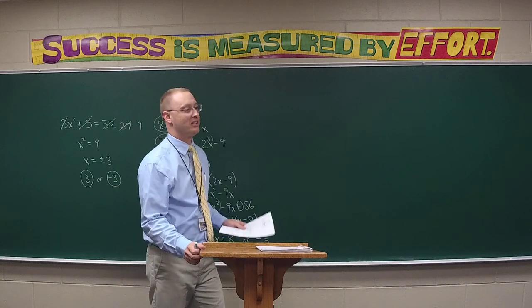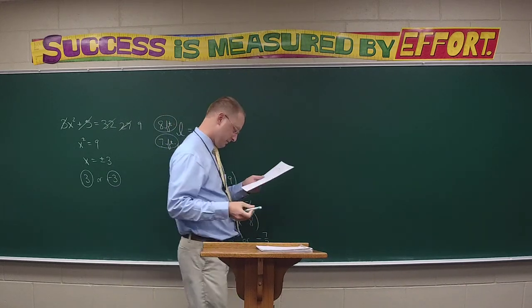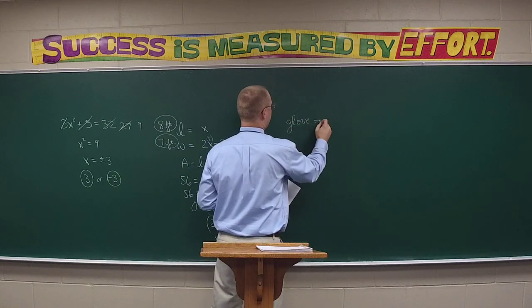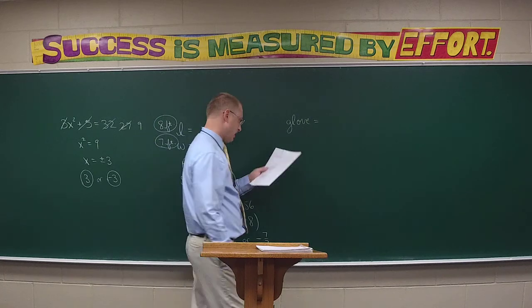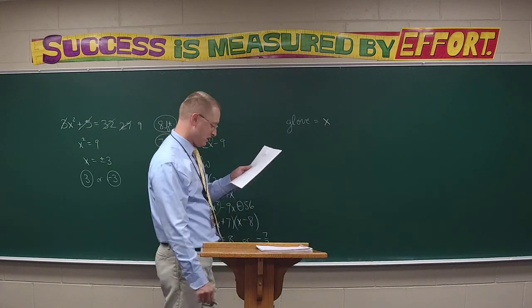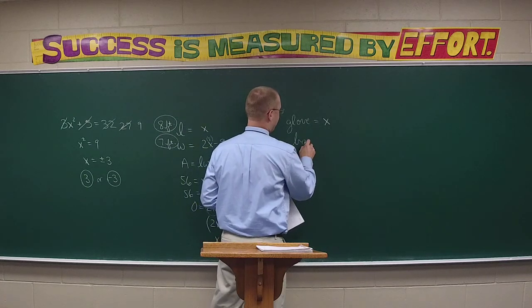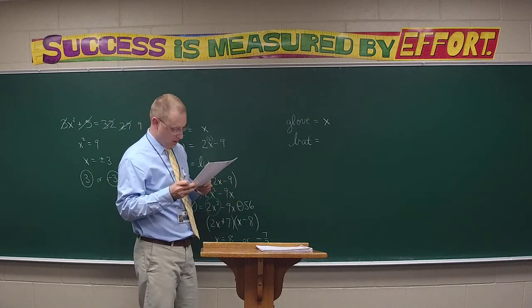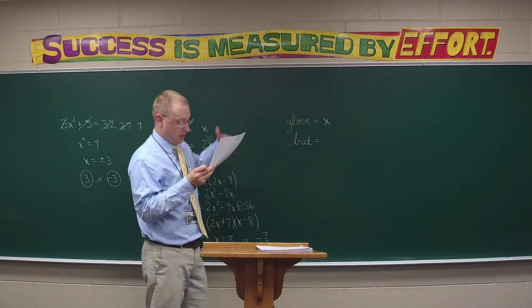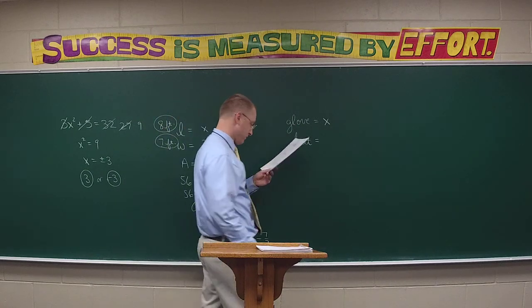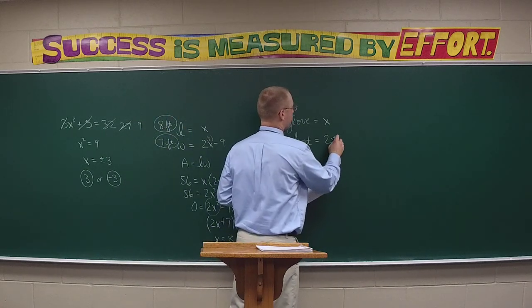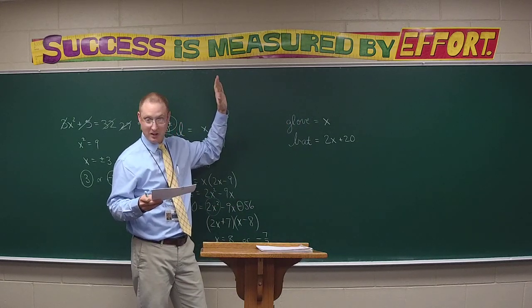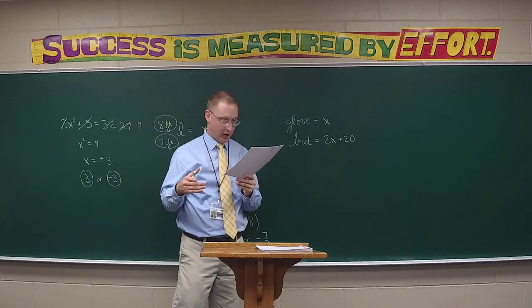Abby, how many unknowns? One. What is it? The glove. If there's only one unknown, it must be x. I feel like there's a second unknown - the bat too. Do we make the bat x or the glove x? Still the glove is x because the bat is defined in terms of the glove. How do we represent the bat? The bat is 2x plus 20.